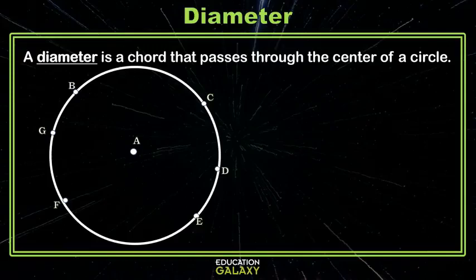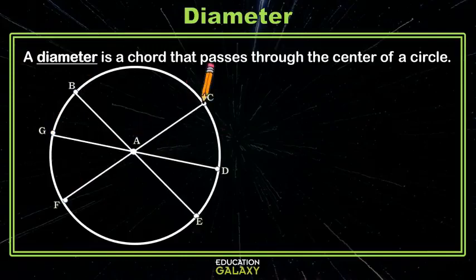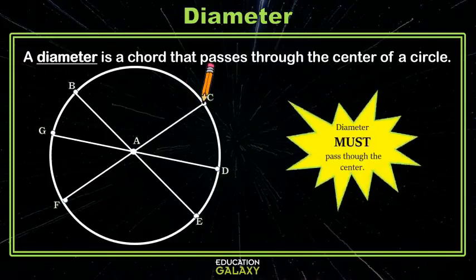A diameter is a chord that passes through the center of a circle. So a diameter is a special kind of chord. Not just any chord can be a diameter. You have to be special. You have to go through the center of the circle. So we can have a diameter here, here, or here. You can have any diameter, as long as it passes through the center of the circle. Those are really special chords.